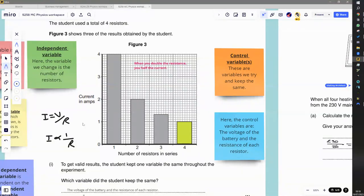That means that when R doubles, I halves. So you can think about it in terms of the equation or you can think about it in terms of the definition of resistance—how difficult it is for current to flow. If you double the resistance, you half the current. We can see that in the graph anyway. When we go from 1 to 2, the current goes from 4 to 2. The current halves.